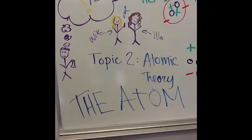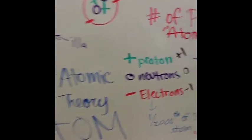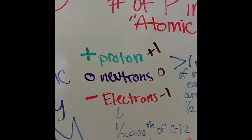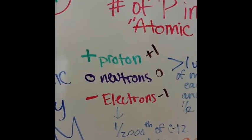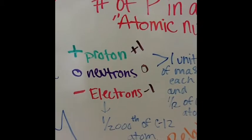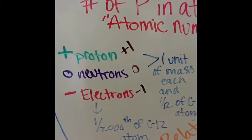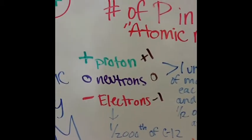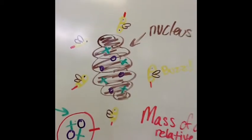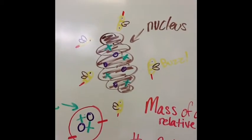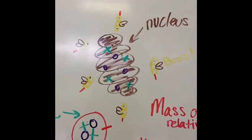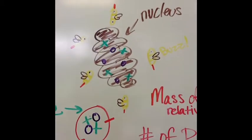The atom consists of protons, neutrons, and electrons. Protons are positively charged, plus 1. Neutrons are neutral, and electrons are negatively charged, minus 1. Think of the atom like this: the nucleus is a beehive, made of positive honey and neutral honeycomb, and surrounding the outside are buzzing negative bees.